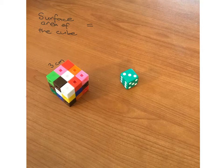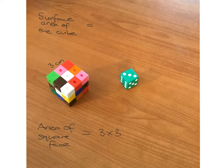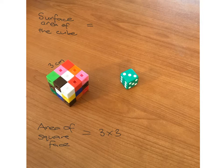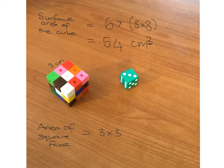Let's work out the area of one of these square faces. If this cube has a side length of three centimeters, then the area of the square face is just going to be three times three. To get the total surface area, we need to figure out how many of these faces there are. A cube has six faces — just like dice have six sides. So we've got six faces, each with an area of nine (three times three). The total surface area is six multiplied by nine, which is 54 centimeters squared. Remember, when it's area, it has to be squared.